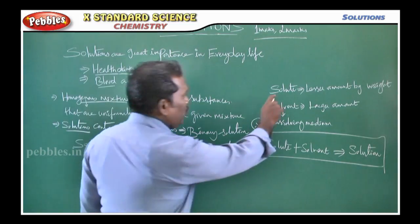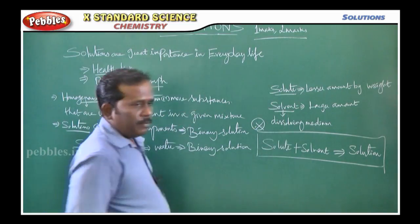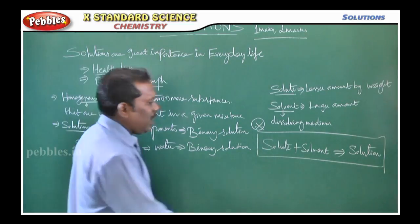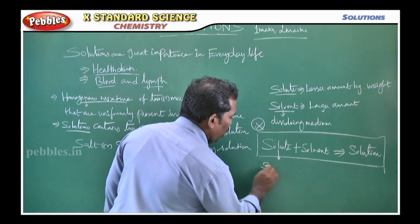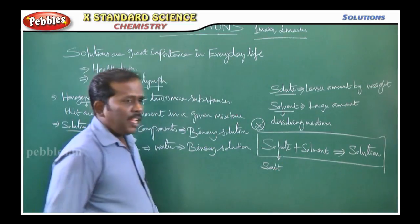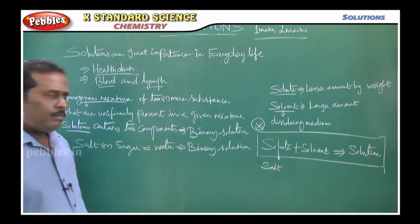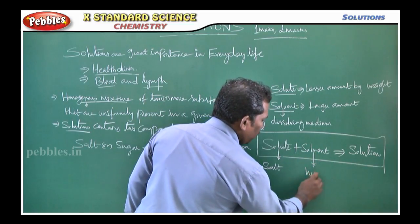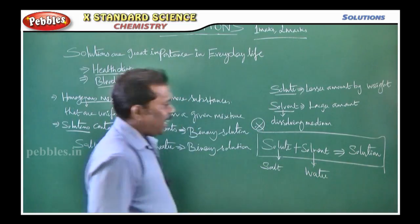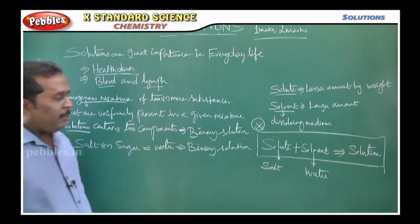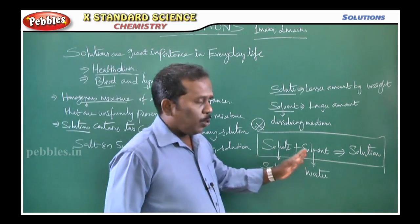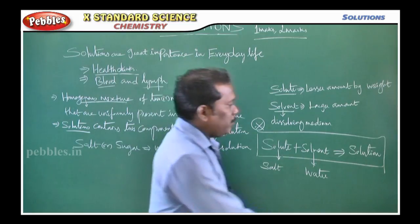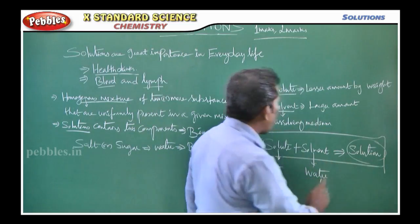The two components are solute and solvent. The solute — for example, salt — is the example of a solute. The solvent is water. Once salt is added to water, it dissolves and forms a solution.